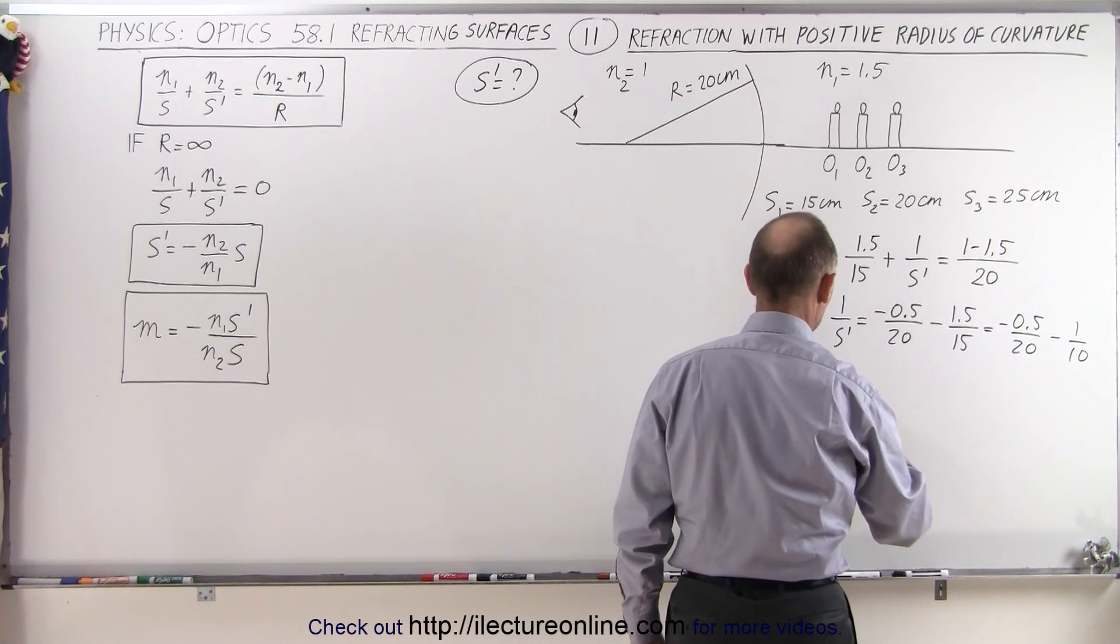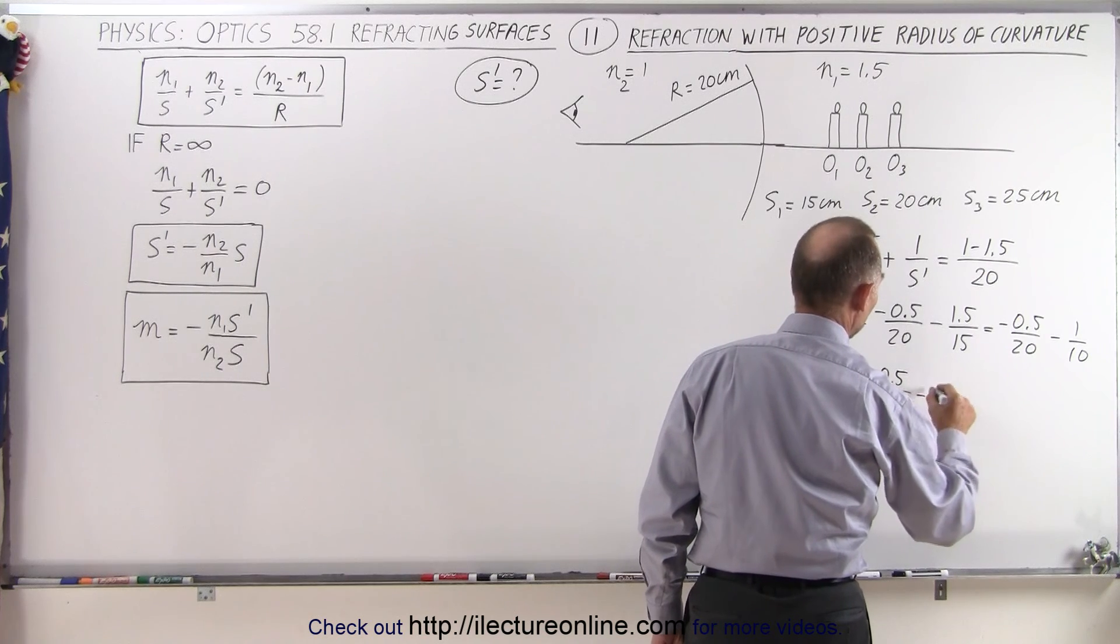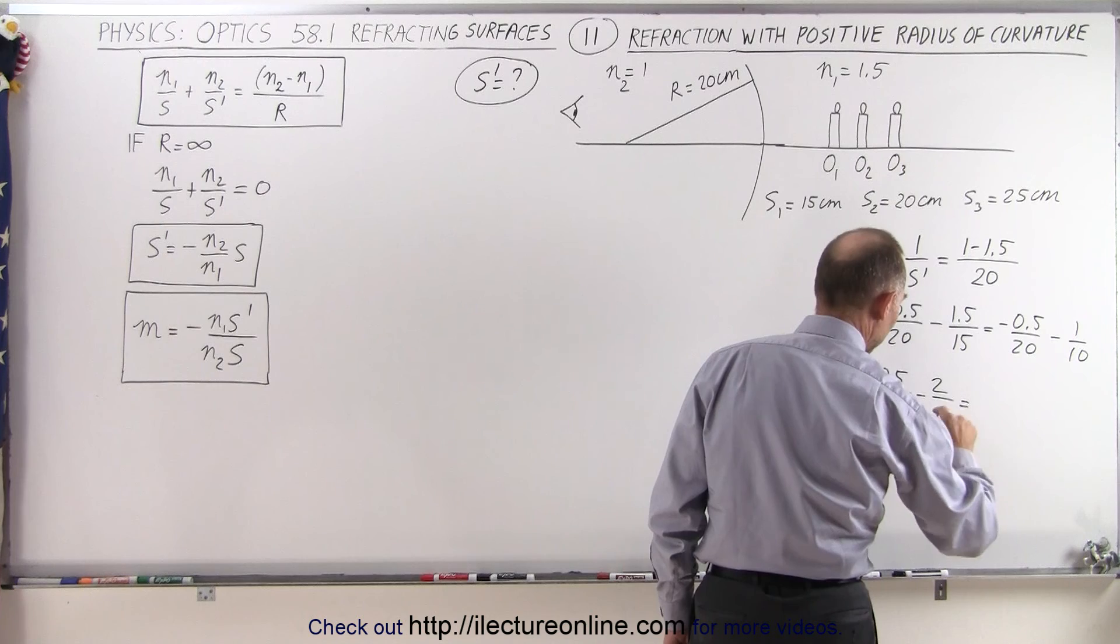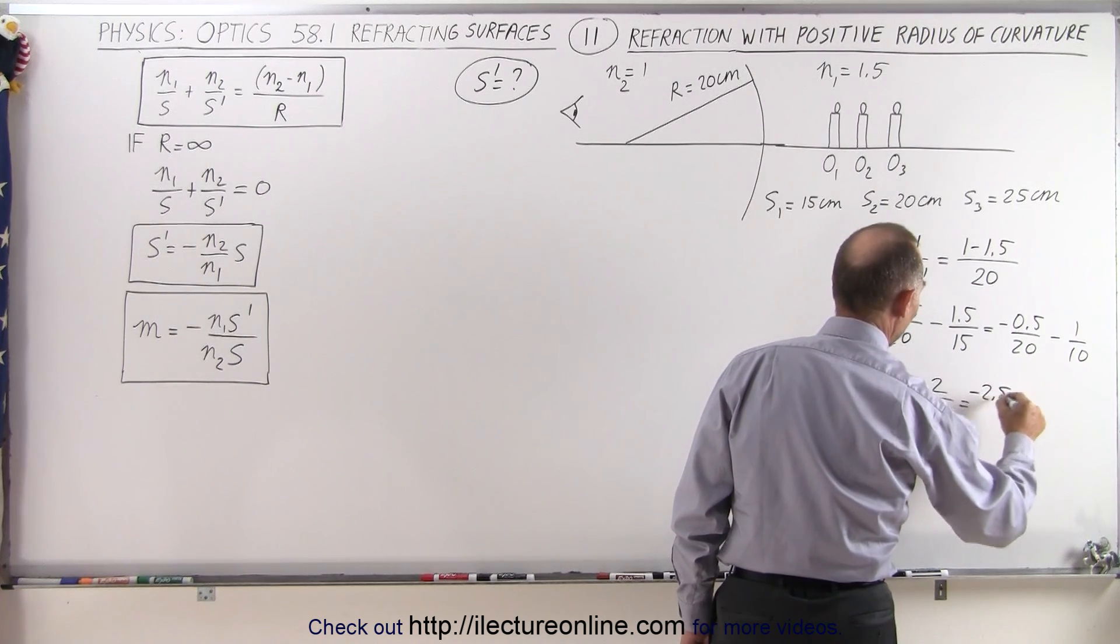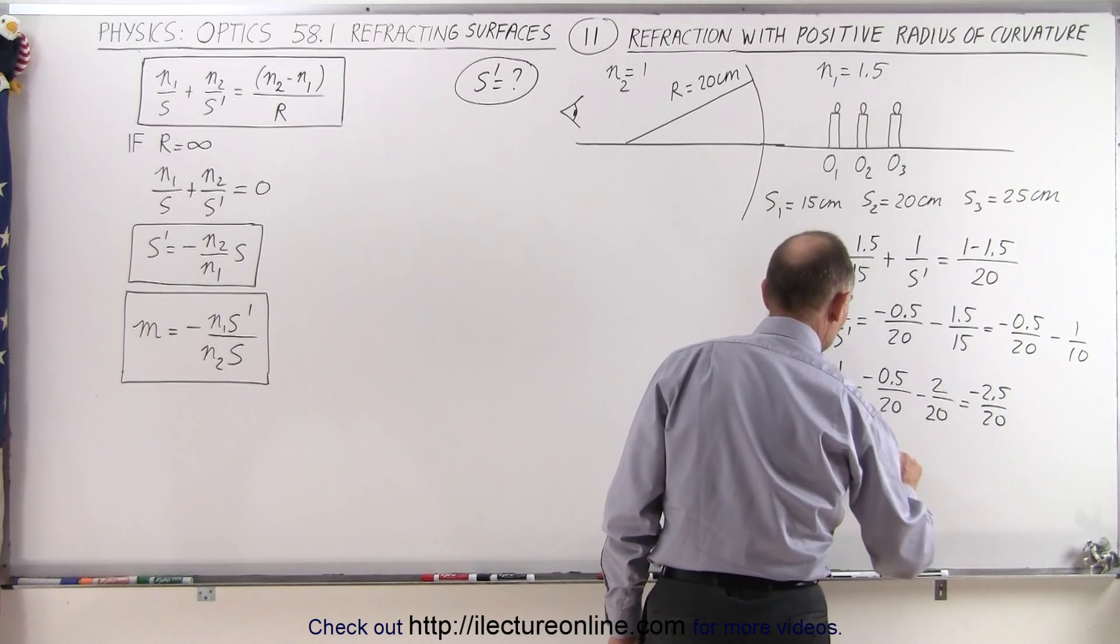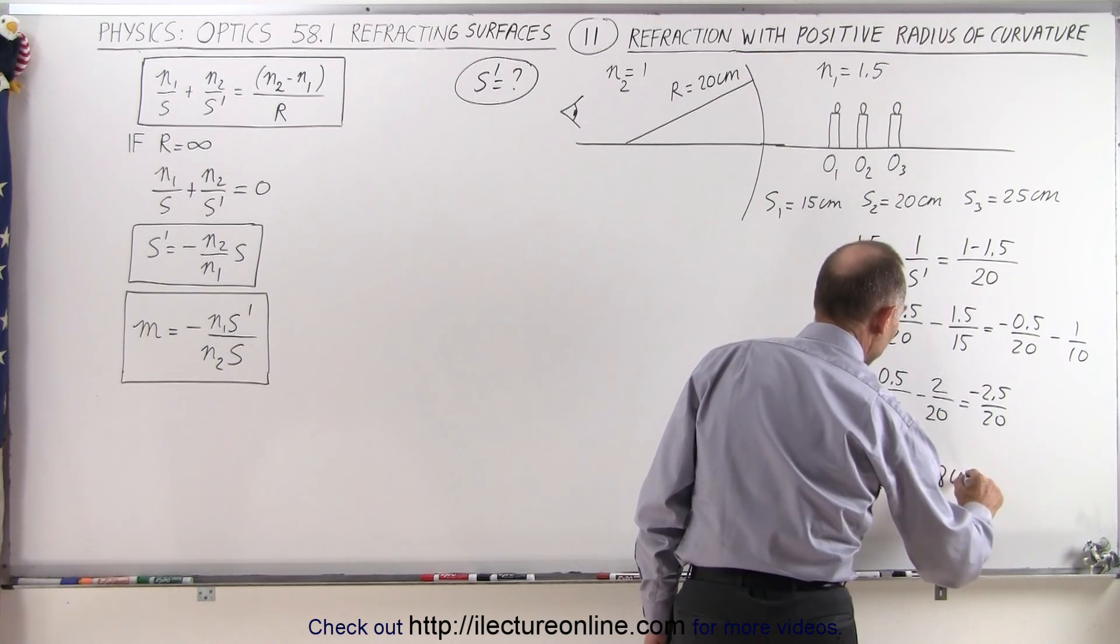So 1 over S' is equal to minus 0.5 over 20 minus 2 over 20, which is minus 2.5 over 20, which means that S' is equal to minus 20 over 2.5, which is equal to minus 8 centimeters.